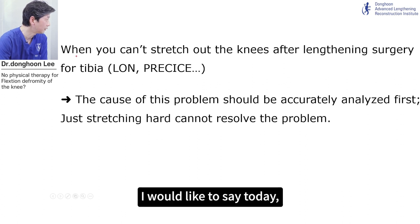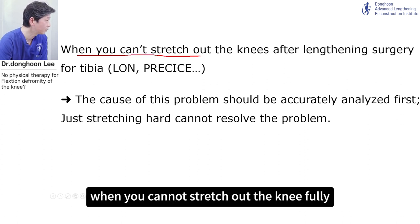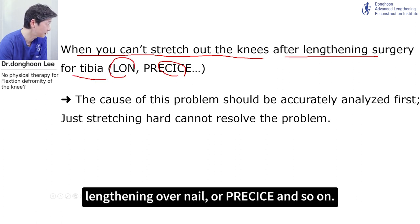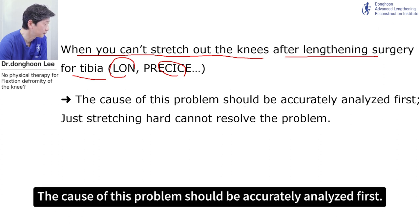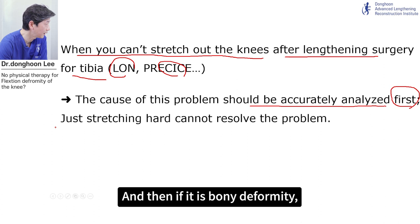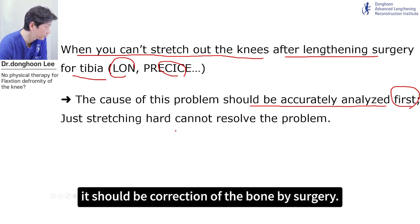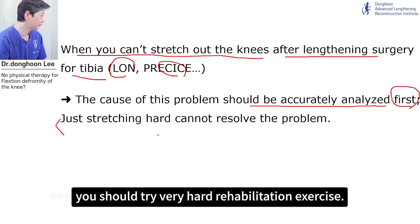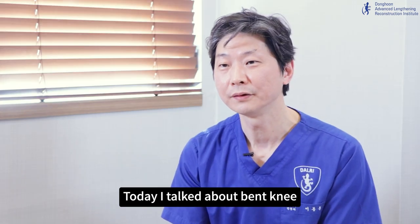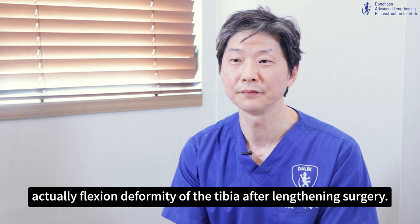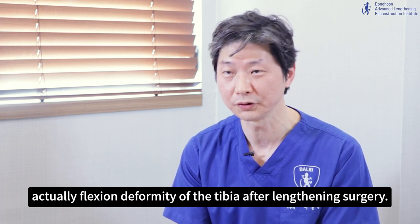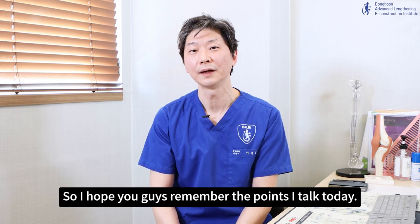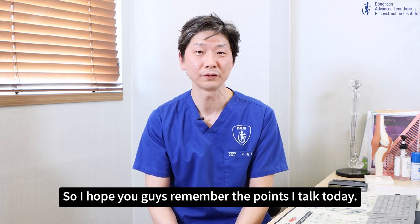This is the most important thing I'd like to say today. When you cannot fully straighten the knee after lengthening surgery of the tibia — whether lengthening over nail, PRECICE, or others — the cause of this problem should be accurately analyzed first. If it is bony deformity, it should be corrected by surgery. If it is soft tissue contracture, you should try very hard rehabilitation exercise. Today I talked about bent knee — flexion deformity of the tibia after lengthening surgery. This may be a very important thing for your healthy joint, so I hope you remember the points I taught today.